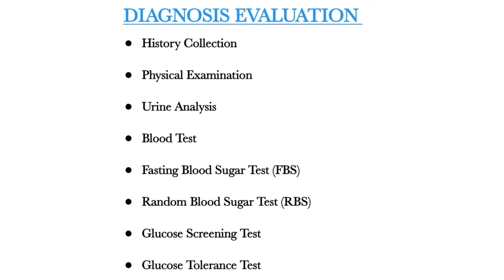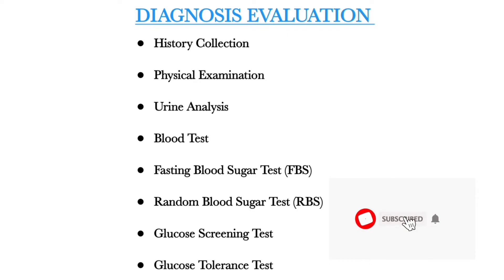Next, diagnosis tests in diabetes mellitus. First is history collection — we should collect the history of the patient and his or her family members. Next is physical examination, urine analysis, and blood tests. The fasting blood sugar test is taken before eating food to check glucose level. The random blood sugar test is taken two hours after eating. The glucose screening test involves drinking a liquid containing glucose and then having blood drawn one hour later to check blood sugar level.